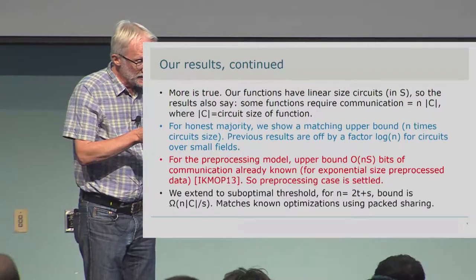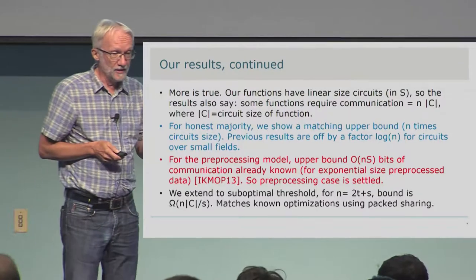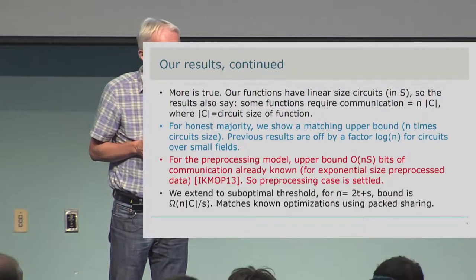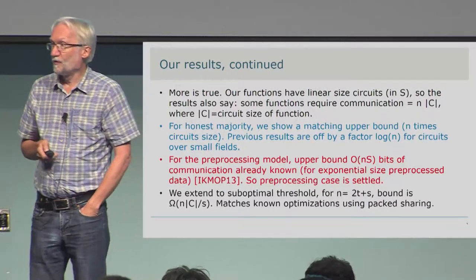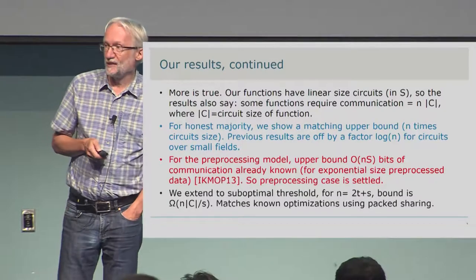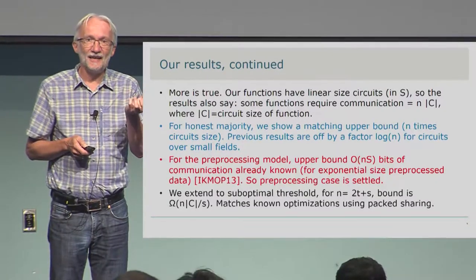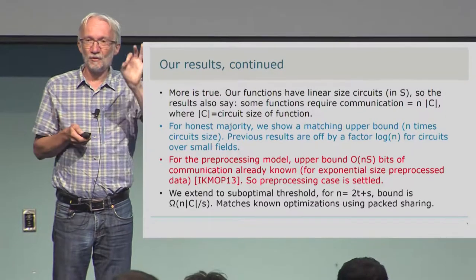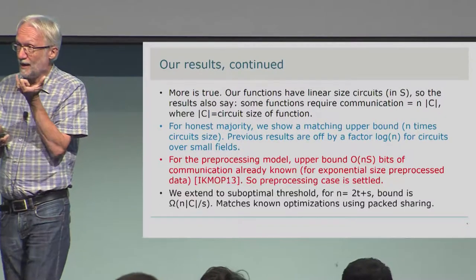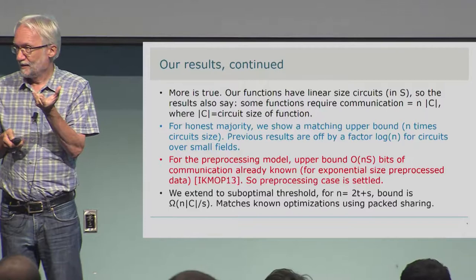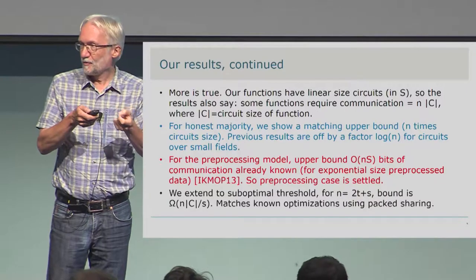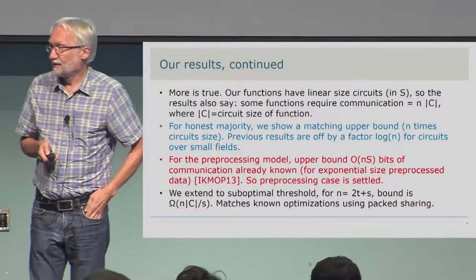We also extend this to sub-optimal threshold. For honest majority, what about n = 2t + s where s can be greater than 1, so the corruption threshold is smaller? Then the bound is what it was before, but divided by s. This exactly matches what we can get for upper bounds using packed secret sharing — a technique where you share a vector of secrets but the shares are still only one field element. You can do a bunch of arithmetic operations in parallel for the communication cost of one, giving smaller communication, but the price is a smaller corruption threshold. This exactly matches our lower bound.